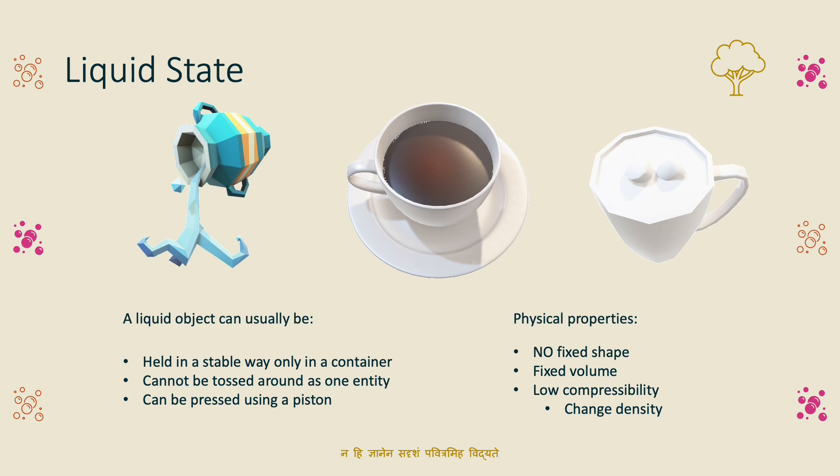The volume of liquid changes but very slightly. Density is less compared to solids. The substance occupies less space in liquid form, so density is less and compressibility is also less.